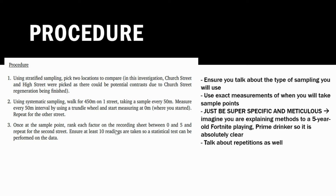So procedure - as I said, it's very simple, but methodology is a section where you can forget a lot of easy stuff. Procedure essentially just means talk about what you did. Within this, talk about the type of sampling you use and use exact measurements when you take sample points. In bullet point number one I mentioned stratified sampling and showed the exact location on Church Street and High Street. In number two I used systematic sampling - I walked 450 meters and took a sample every 50 meters, so I had 10 sample points in total starting at zero meters.